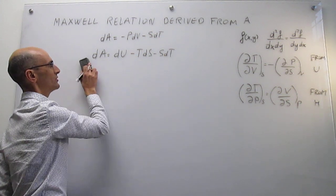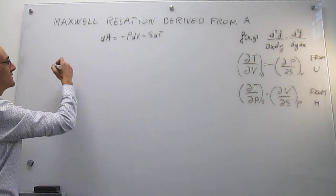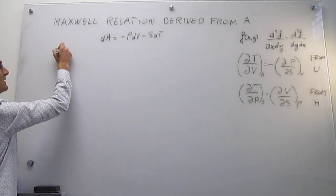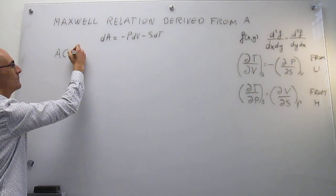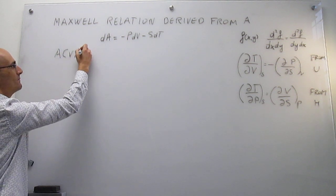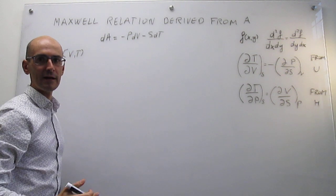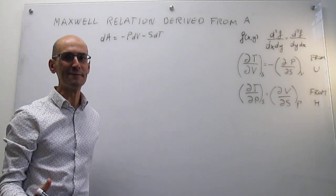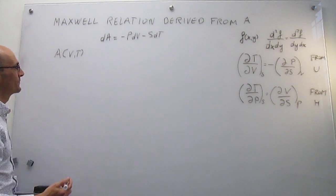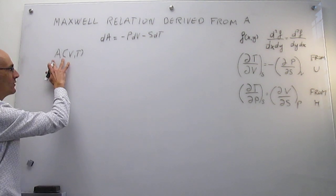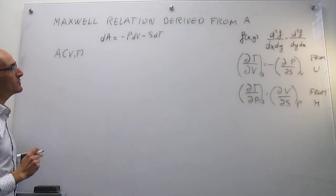That fundamental equation tells us that it's natural to express the Helmholtz energy as a function of volume and temperature. These are the natural variables because the thermodynamic equation has a very compact, elegant form, and it's easy to see how those variables are related. So the natural variables of the Helmholtz energy are volume and temperature.